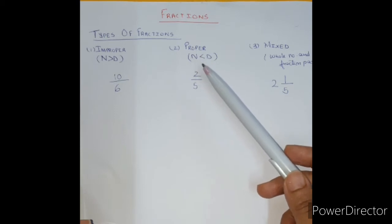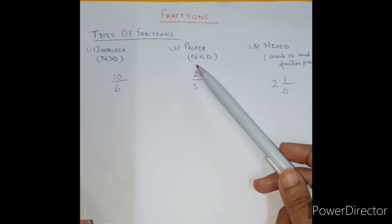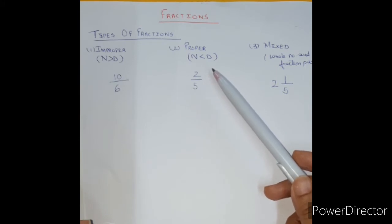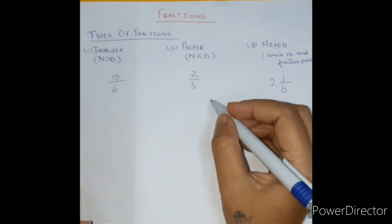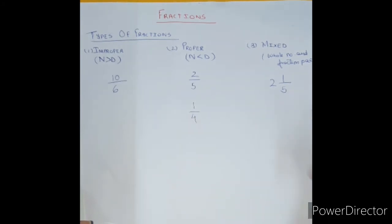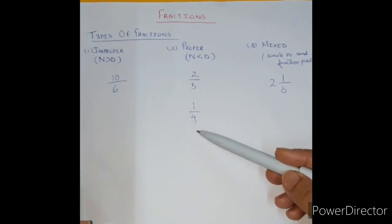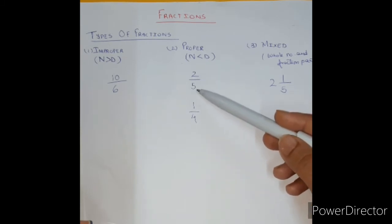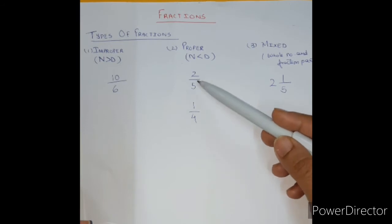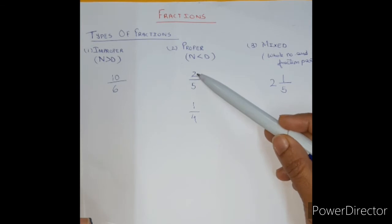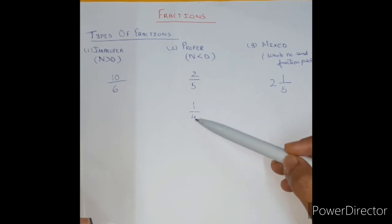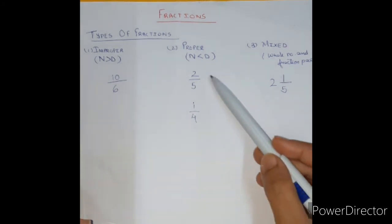Proper fractions means the numerator is always less than the denominator. For example, 2 upon 5, or 1 upon 4 — also written as 1 divided by 4 or one fourth. This line between them is called the 'upon' sign or division sign. The top number is always the numerator, and in a proper fraction, the numerator is less than the denominator, which is the bottom number.